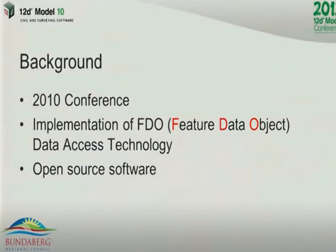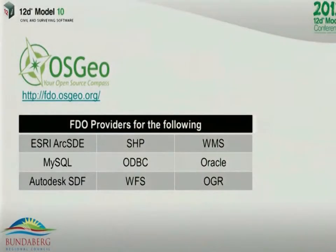I presented here at the 2010 conference and at that stage we were early on in our implementation of FDO — Feature Data Object Technology — basically open source software that's been built into version 10 of 12D model. There are various FDO providers; we use Esri Arc SDE to connect to, and also the WMS, but as you can see there's also MySQL, SDFs, and shapes, which we use quite a fair bit as well.